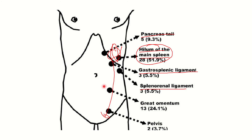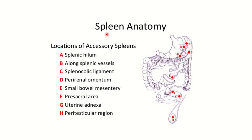The accessory spleen may also be present in the greater omentum and the pelvis — in the left side and in all parts of the abdomen. It is important to note that the spleen is not a retroperitoneal organ, so it is usually present anterior to the peritoneum, within the peritoneum, or within other ligaments. This image shows the spleen anatomy and the locations of the accessory spleen.